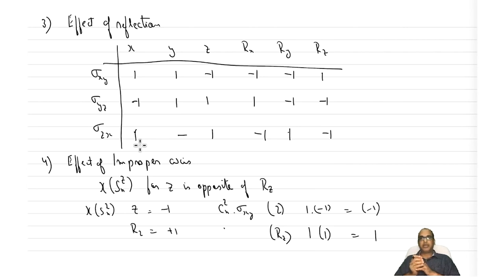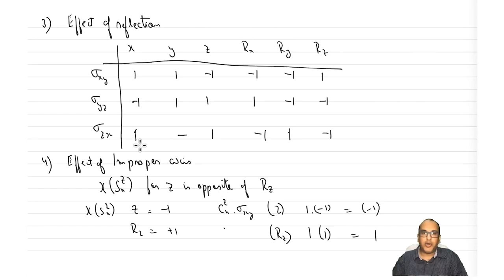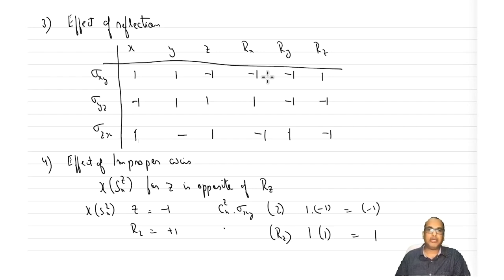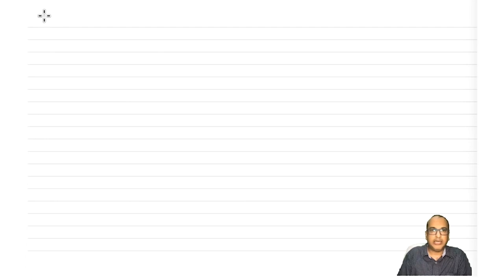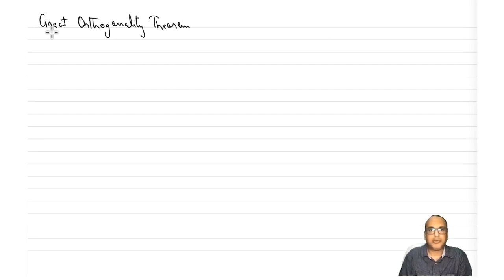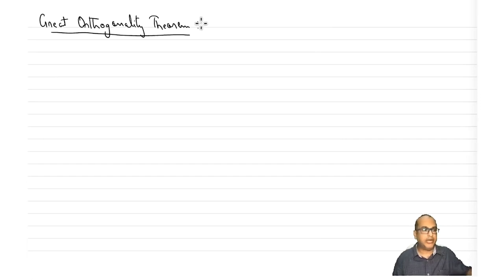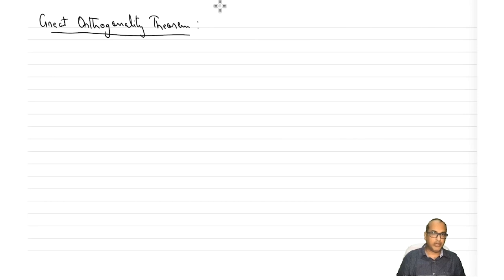We can use these thumb rules to generate irreducible representations, but they will not generate the complete set. Hence we have to resort to something called the Great Orthogonality Theorem. Let us look at what that is — Great Orthogonality Theorem.